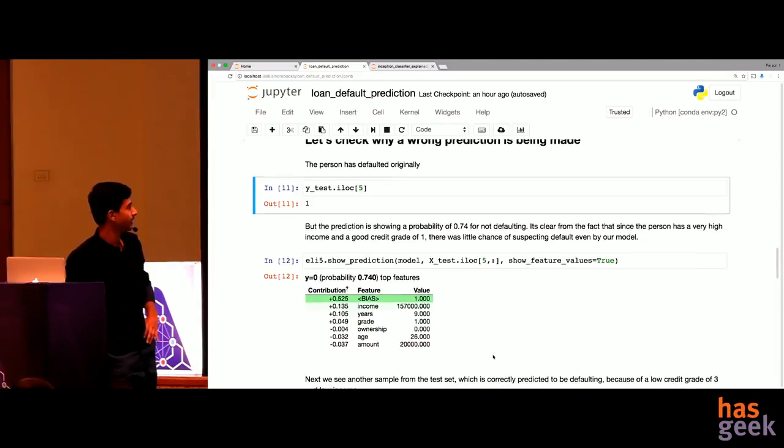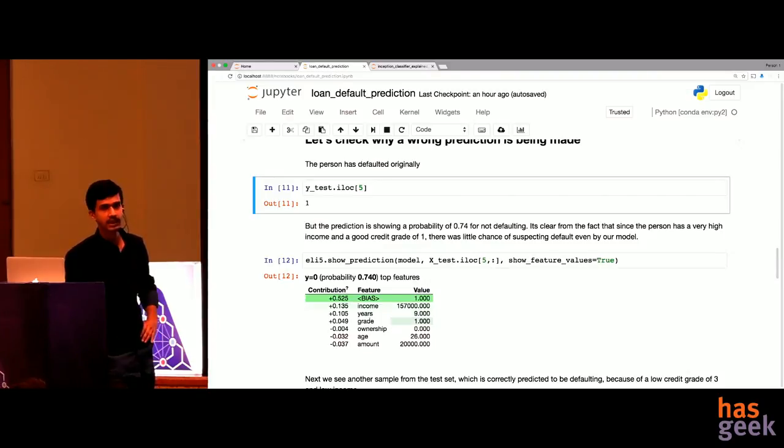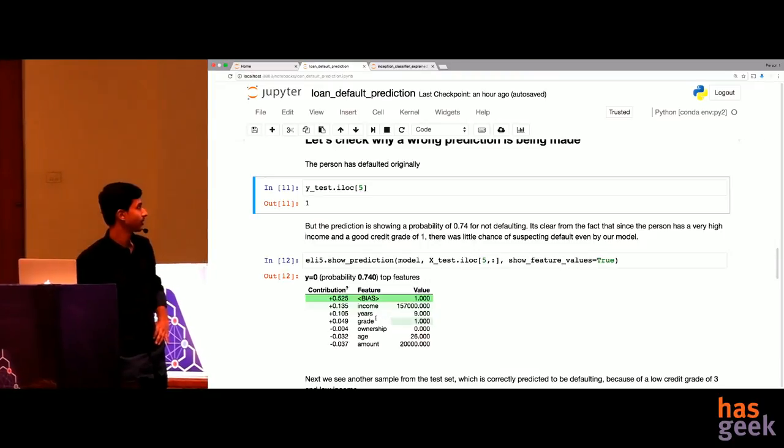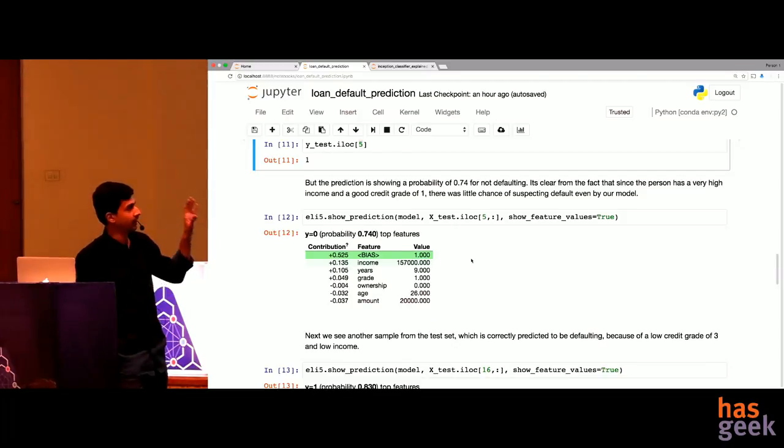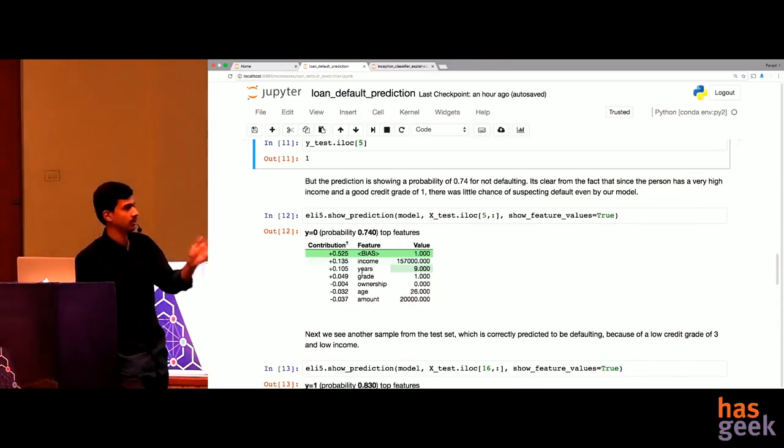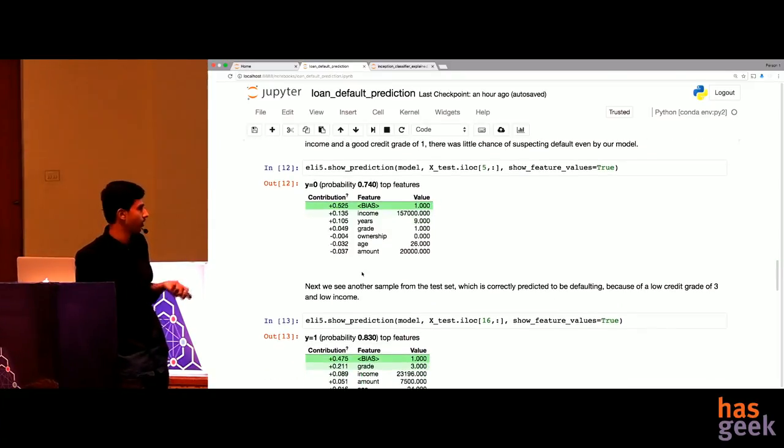Now if you see here, this is the contribution values. You see the income is playing a big factor. The number of years is playing a big factor. The grade, the credit grade of the person is playing a big factor. So since the person has a very high salary, the model thought that maybe that person would not default. So now you can show that it's because of these parameters and the proper contribution values that the model is throwing out error like this and you can debug it and make a better model out of it.